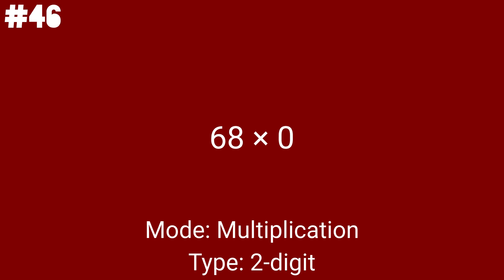The tenth problem is 68 times 0, and this is the last multiplication problem before we move on to triple digits. You know what anything multiplied by 0 equals, right? Just like you remember the answer to any number multiplied by 1. So anyways, let's move on to 3 digits.